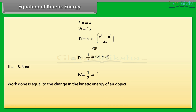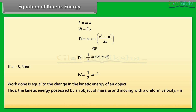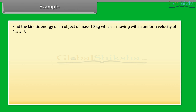It is clear that the work done is equal to the change in kinetic energy of an object. Thus, the kinetic energy possessed by an object of mass M moving with a uniform velocity V is ½MV². Example: find the kinetic energy of an object of mass 10 kg moving with a uniform velocity of 4 m/s.